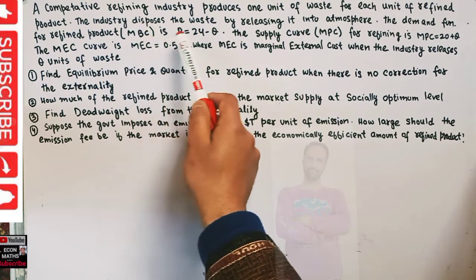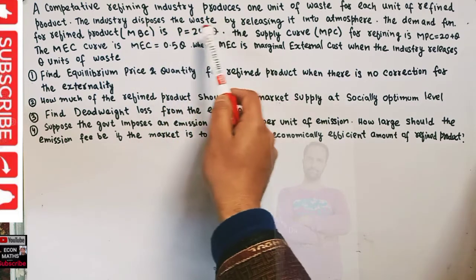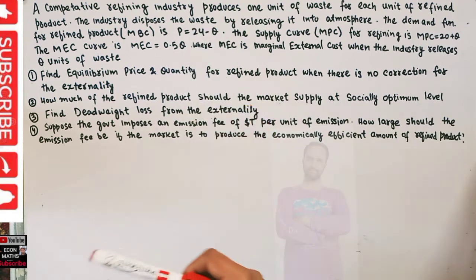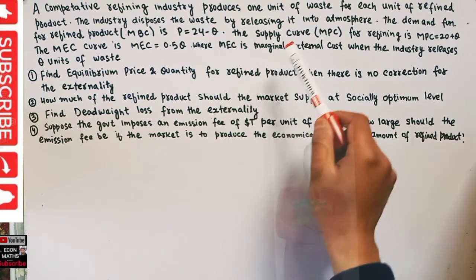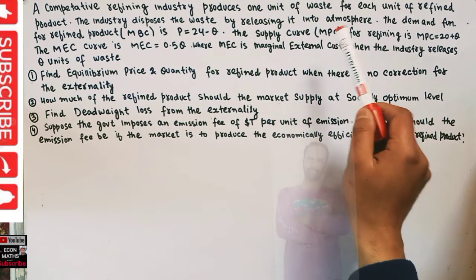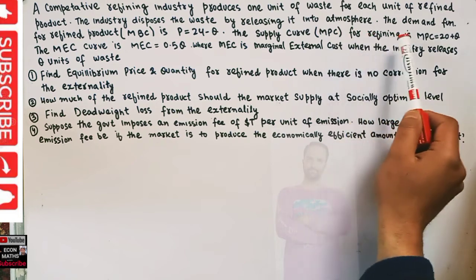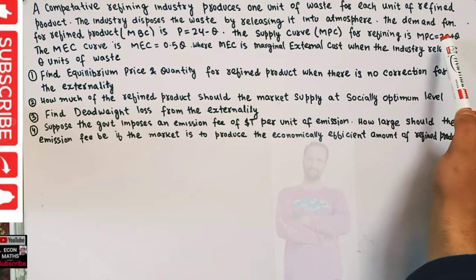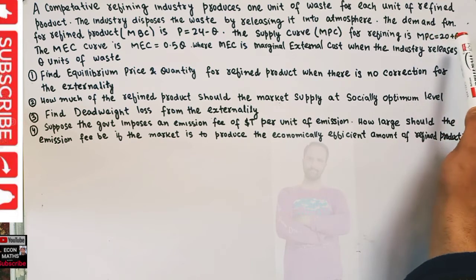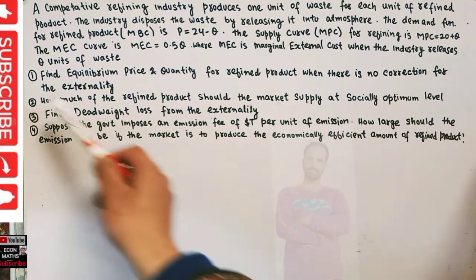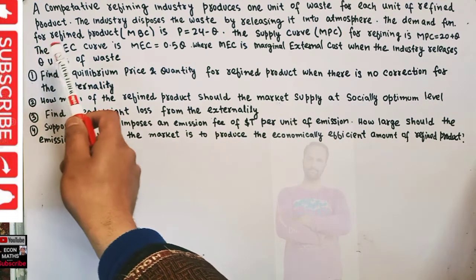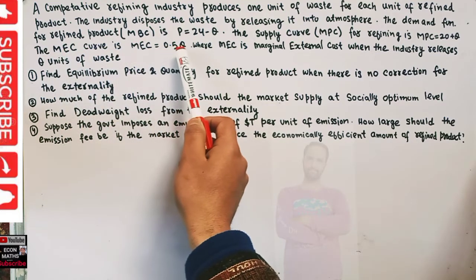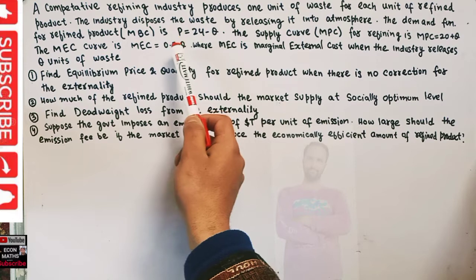The demand function for the refined product — that means the marginal benefit curve — is given by P = 24 minus Q, where P is the price and Q is the output. The supply curve, which we call the marginal private cost for refining, is given by MPC = 2 plus Q.